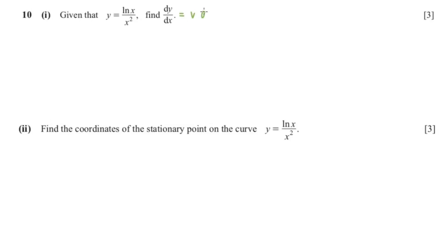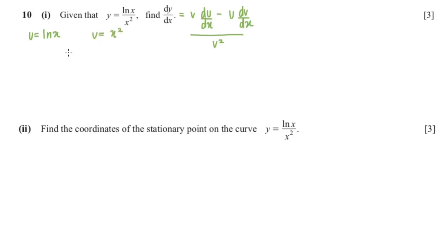This question wants us to differentiate, so I'm going to use the quotient rule: v multiplied by du/dx minus u multiplied by dv/dx, all over v squared. Our u is ln(x) and our v is x squared, so du/dx would be 1/x and dv/dx is 2x.